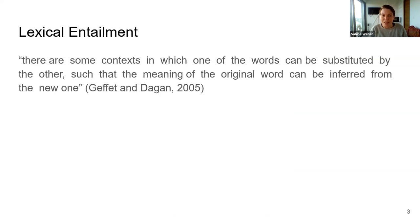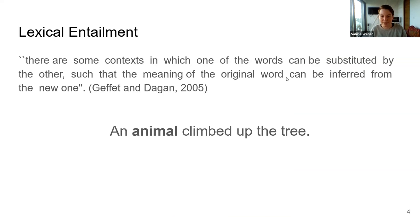Geffet and Dagan find a definition for lexical entailment that looks something like this. They say there's lexical entailment where there are some contexts in which one of the words, like for example cat, can be substituted by the other such that the meaning of the original word can be inferred from the new one. So if you look at the sentence the animal climbed up the tree, we can replace animal with cat and the first sentence will still be true because cat entails animal. Cat is an animal, that's something that we know.